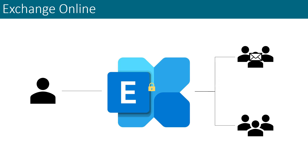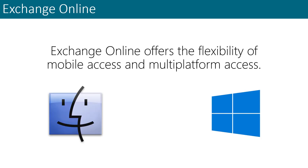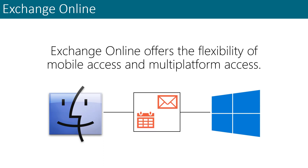Exchange Online also offers the flexibility of mobile access and multi-platform access. Users can access their mailboxes and calendars via Outlook from both Windows and Mac machines using MAPI over HTTPS. They can also use Outlook on the web to access their mailboxes and calendars from virtually anywhere. Microsoft Exchange ActiveSync allows users to access their mailboxes and calendars from mobile devices.